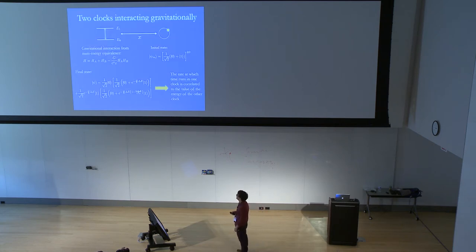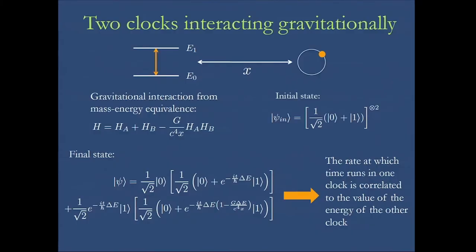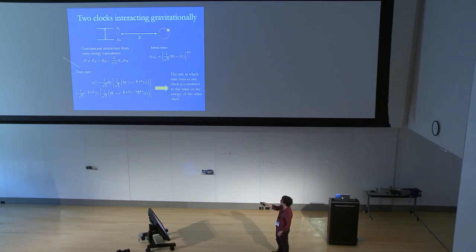So this is the main idea and this is how we express all what I said mathematically. We start in an initial state as a factorizable state and superposition of energies. This is a state of the two clocks and then we let them evolve with this Hamiltonian.